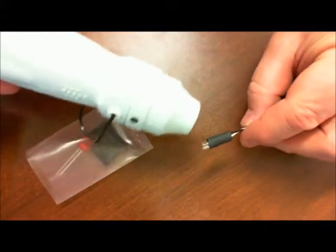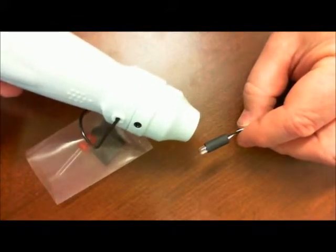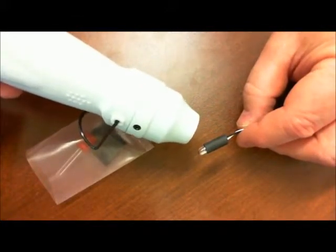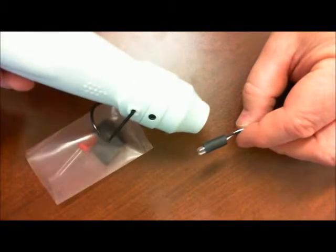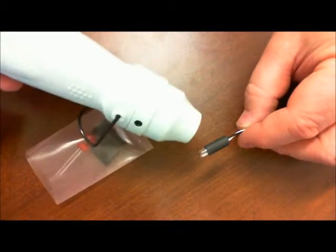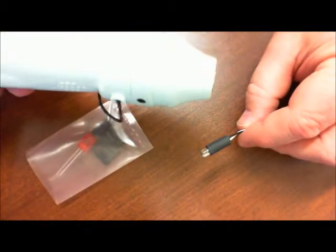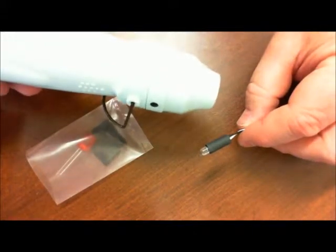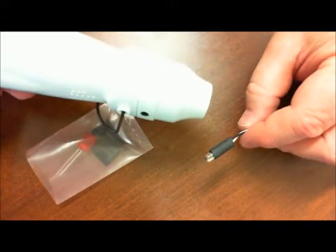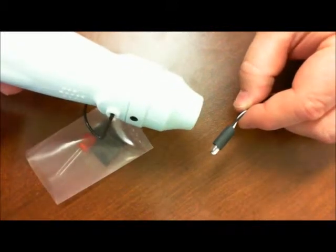Other ways of doing the heat shrink tubing are using a match or a lighter or rubbing the tip of a soldering iron along it to shrink it. But hobby heat guns are a little bit nicer to use, and they're not as hot as the industrial heat guns that are made for stripping paint and things like that.